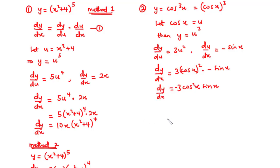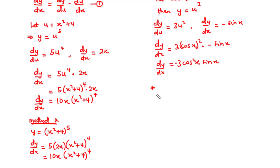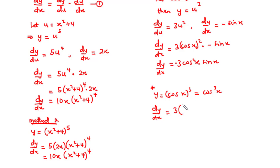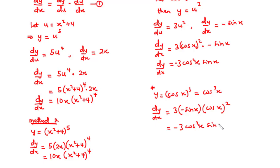Using the alternative method for y = cos³x: drop down the exponent (3), find the derivative of the inner function cos x, which is −sin x, repeat the inner function (cos x), and reduce the exponent by 1 (to 2). This gives 3 × (−sin x) × cos²x = −3cos²x sin x, confirming the same answer.